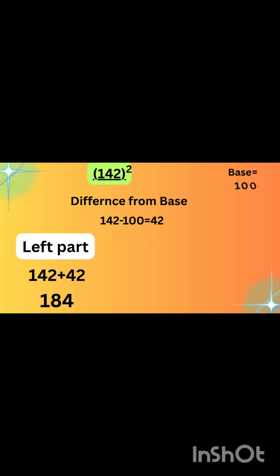Now first we will solve the left side of our answer. The actual number is 142, and we get 42 after subtraction. Now 142 plus 42, that will be 184.